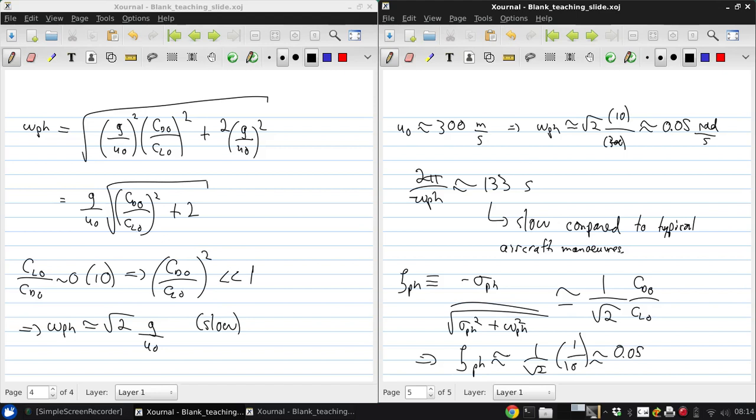So this damping ratio indicates how quickly the motion is damped, where larger means that it's damped more quickly. So we see here that the fugoid is weakly damped, so this is a non-dimensional value where one would be a completely damped motion.